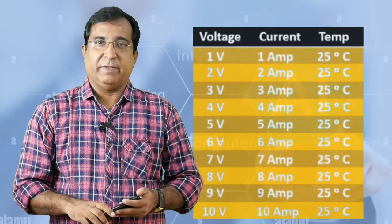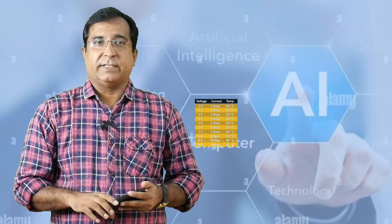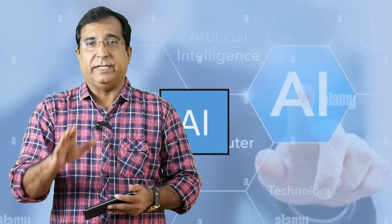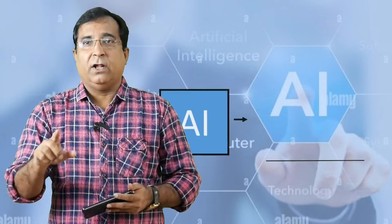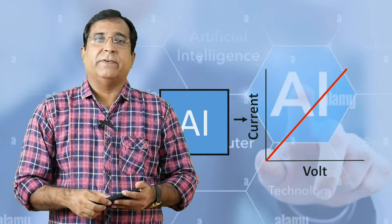Now I have historical data with me for this simple process - the exact behavior of this process. When I feed these historical data sets to AI model, the AI model built around Python program libraries establishes a relationship between input and output readings and draws a straight line on a graph and stores in its memory. So this way AI model is learned about process behavior that my process will behave like this.